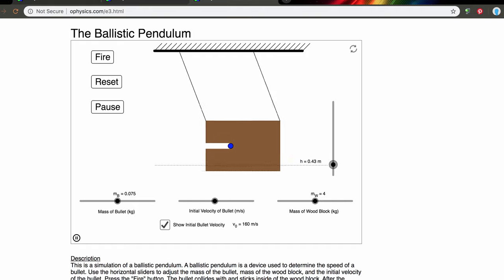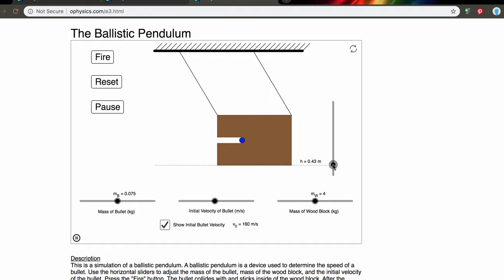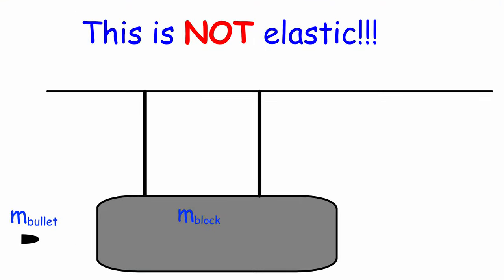So now we're going to look at solving the system using algebra. Here's our bullet, here's our block of wood. The mass of the bullet is m subscript bullet, and the mass of the block of wood is m subscript block. We're going to solve this using algebra and come up with an algebraic expression that we can use for any combination of initial conditions.